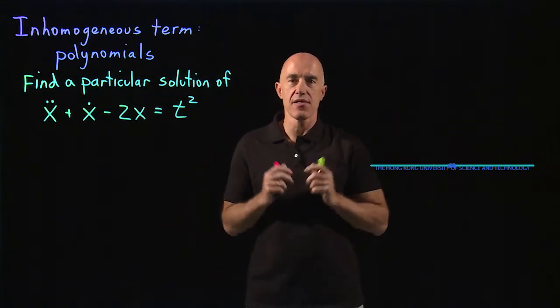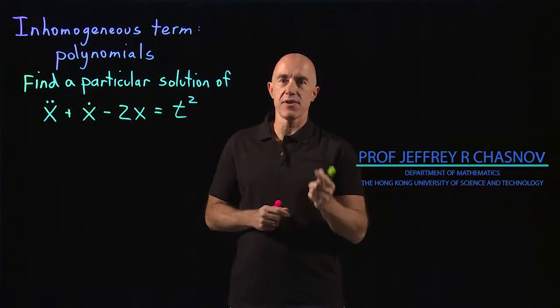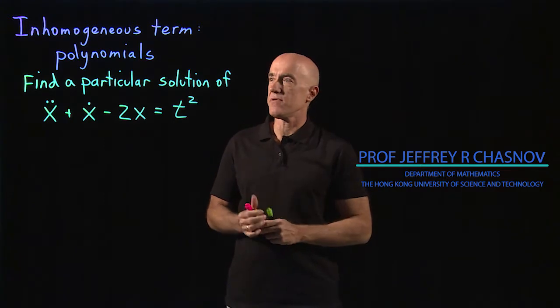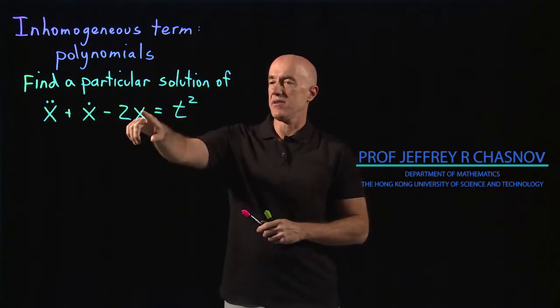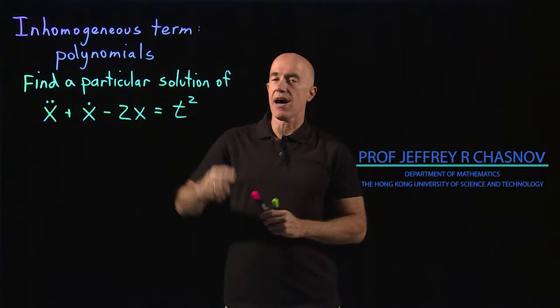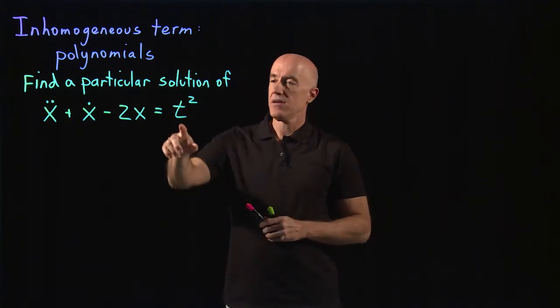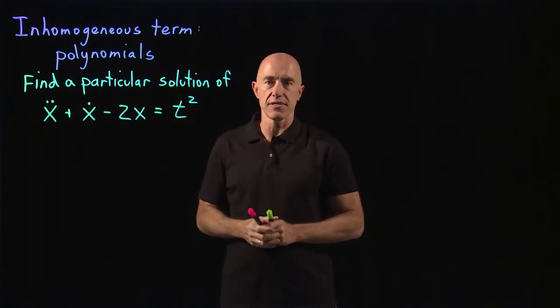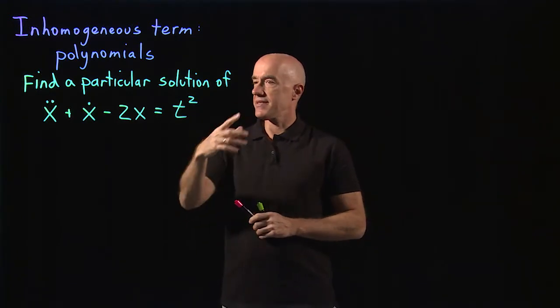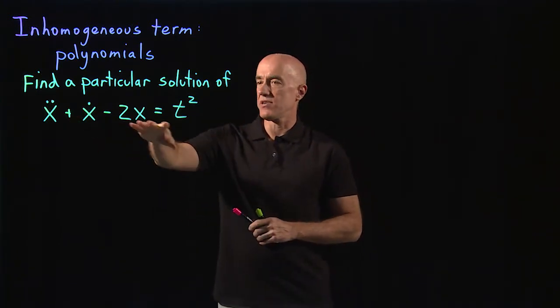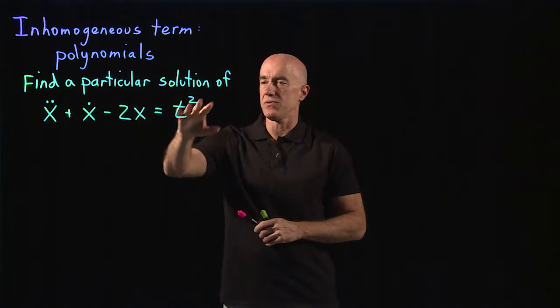Let's try another example of a different inhomogeneous term. Here we're going to look to see what sort of ansatz we should make when the right-hand side is some polynomial in t. The example I want to do is this differential equation equal to t squared.